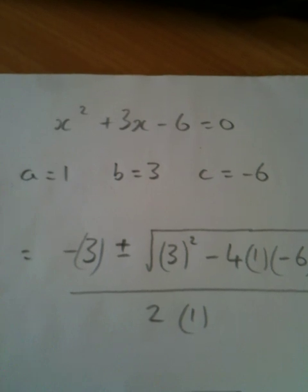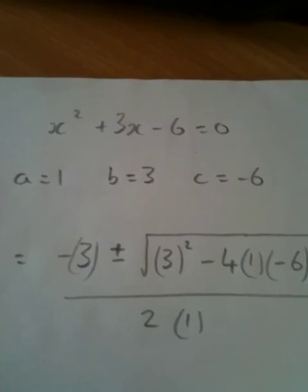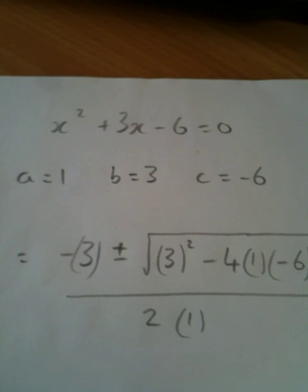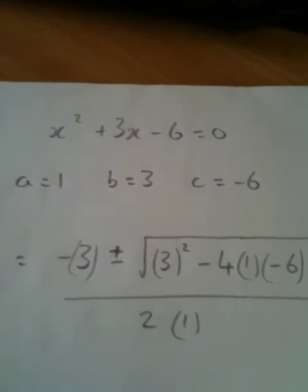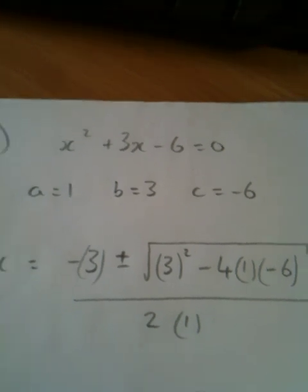So quickly note down the values of a, b, and c. a is the coefficient, or how many x squareds you have. b is the coefficient of x. We have 3x's, so b will be 3. And c is negative 6 in this case.